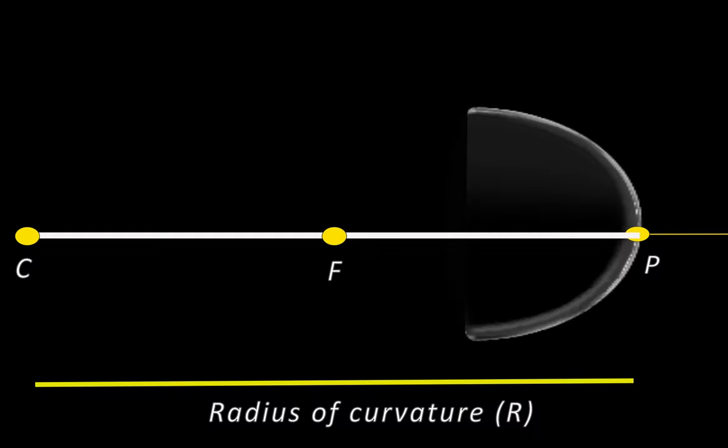If the reflected rays appear or tend to meet at a point after hitting the reflecting surface, that point is called the principal focus of a convex mirror. Principal focus is represented by letter F, and the distance between the pole and the principal focus is called the focal length, represented by small f.